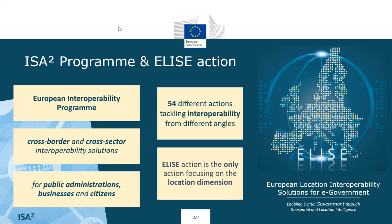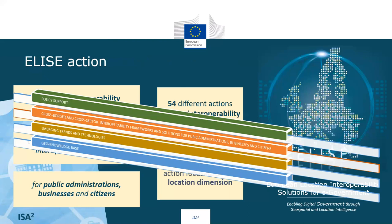There are 54 different actions tackling interoperability from different angles, while ELISA Action is the only one focusing on the location dimension, aiming to support different policy initiatives at European and national levels, providing reusable interoperable cross-border and cross-sector frameworks and solutions for public administrations, businesses, and citizens. It also discovers how emerging trends and technologies enable more effective use of location data for policy and digital public services.